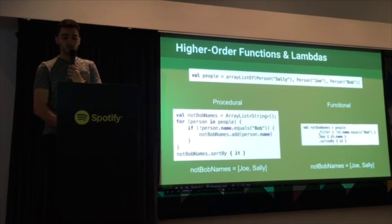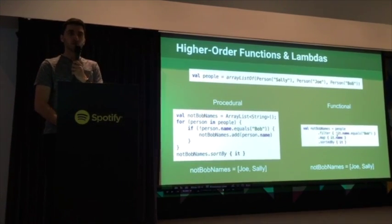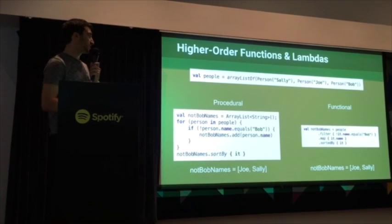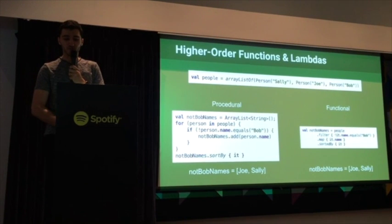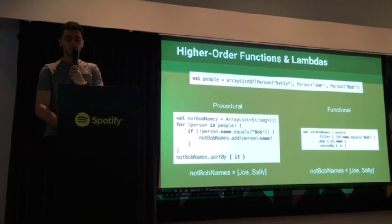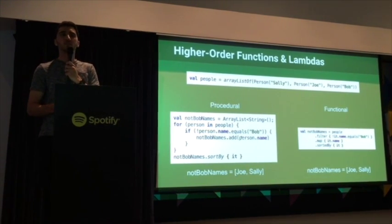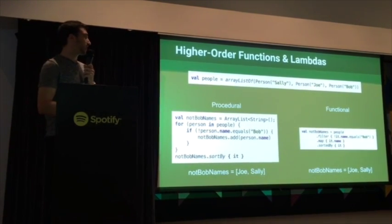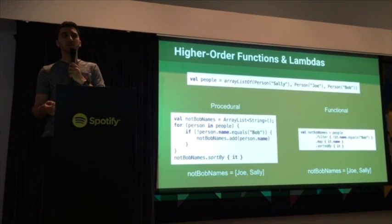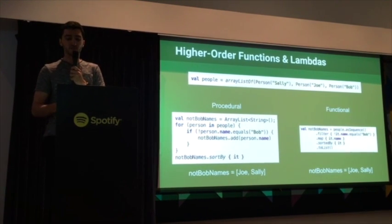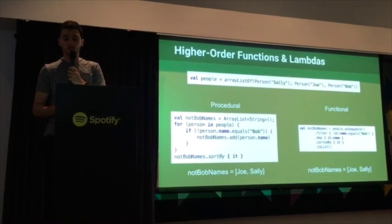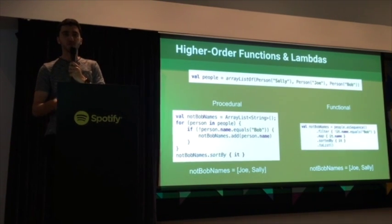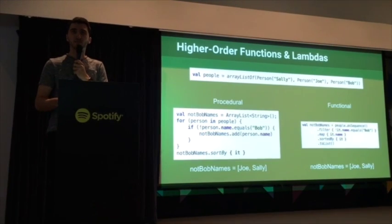In Kotlin, if there's one parameter to the lambda, you can just use the word 'it'. It looks a little weird at first, but once you get used to it, it's definitely more concise. One difference is that using filter and map would actually iterate through the list twice. To match the performance of the procedural approach, you can use the asSequence method, which returns a lazy collection — apply your transformations and call toList at the end, so it only iterates once. That's very similar to the Java 8 Streams API.